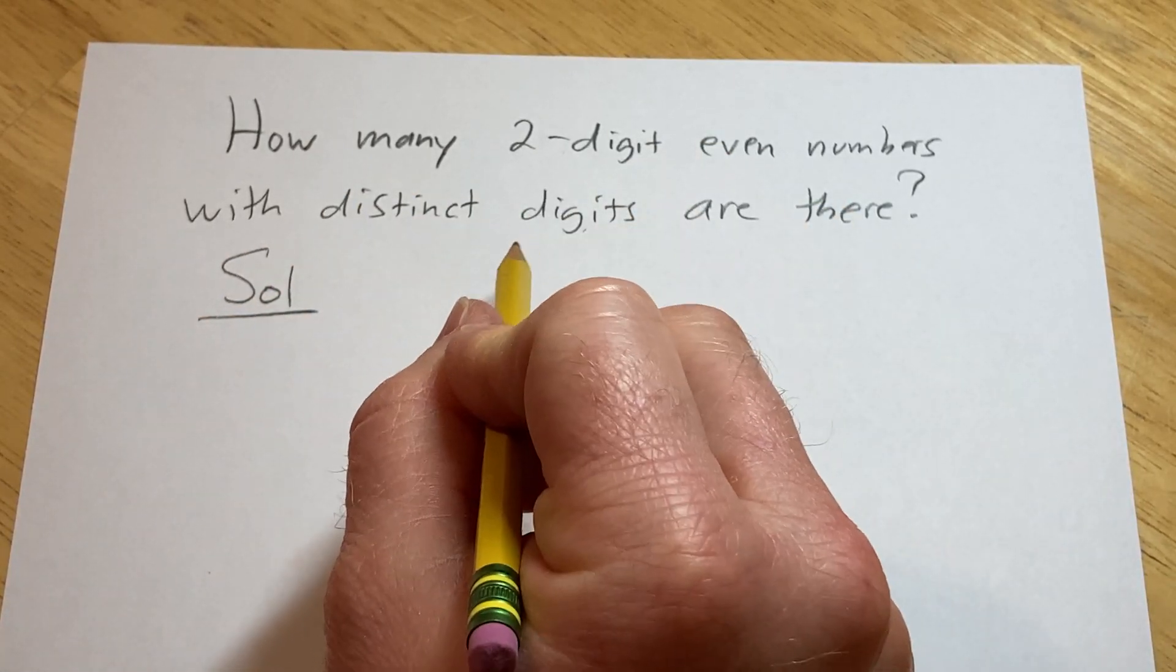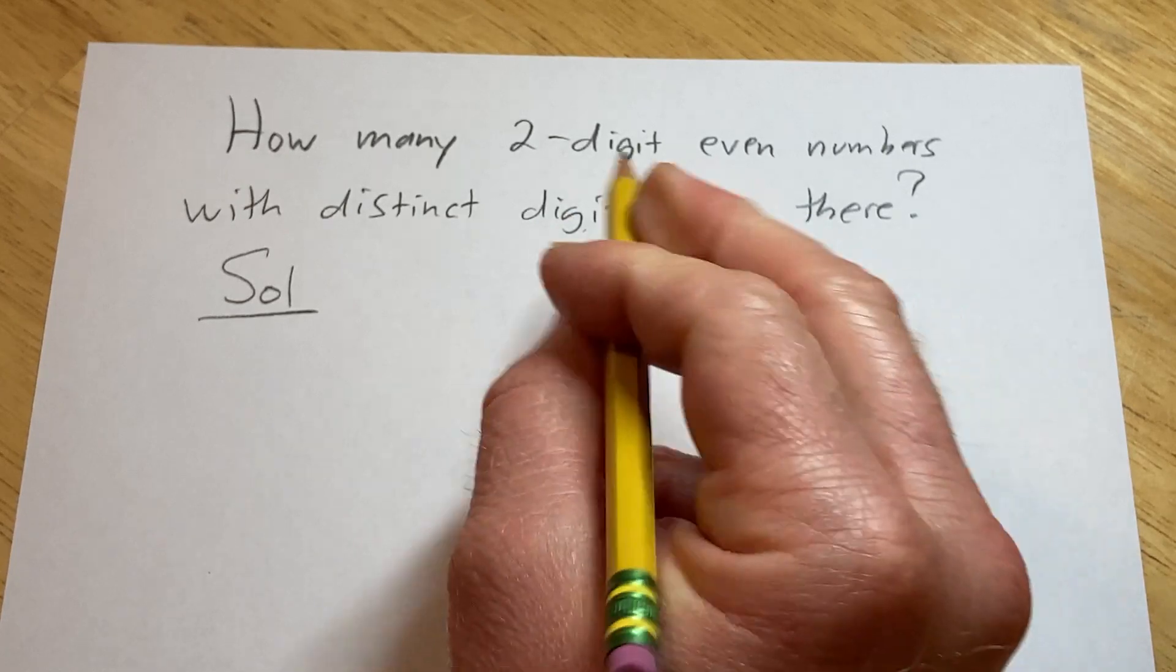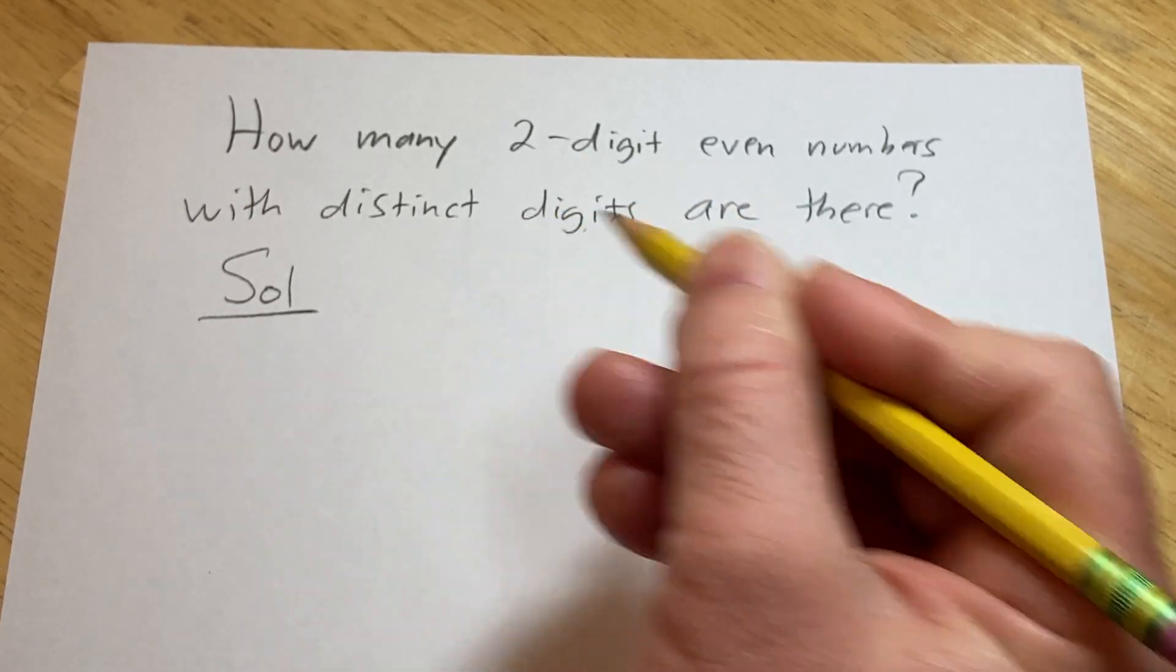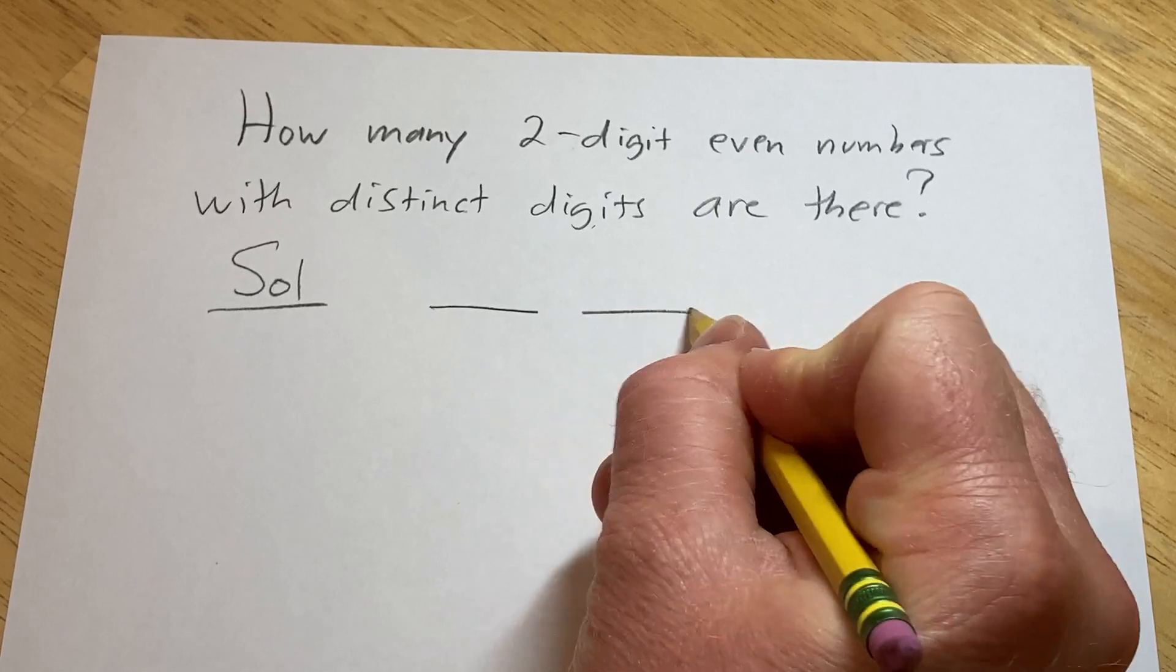So let's go ahead and try to work through this. First let's focus on how many two-digit even numbers there are. So a two-digit number has two digits.